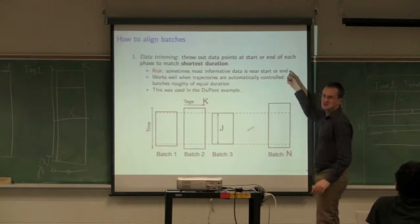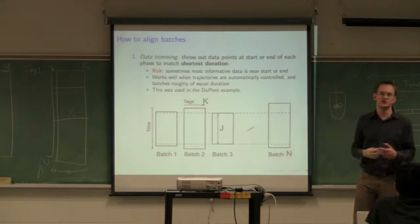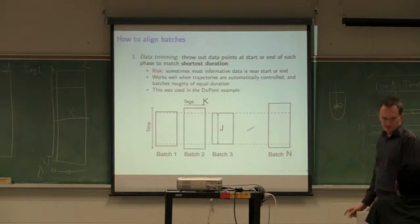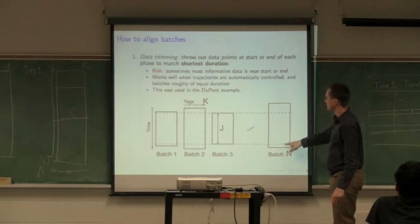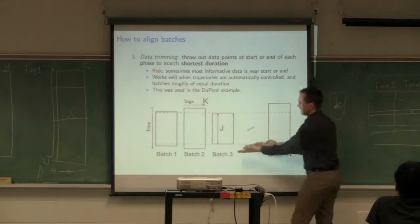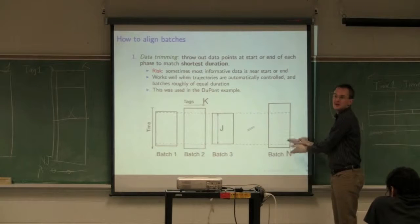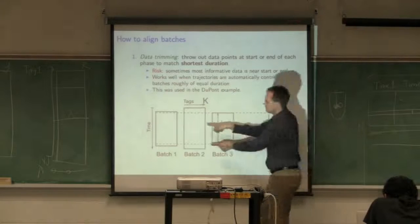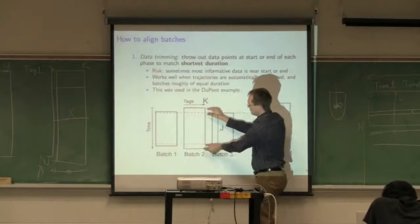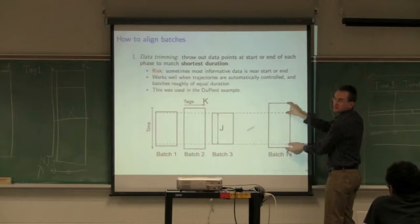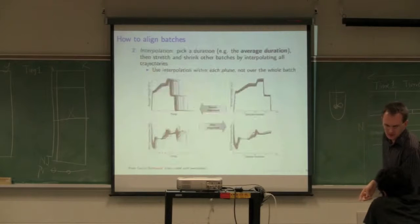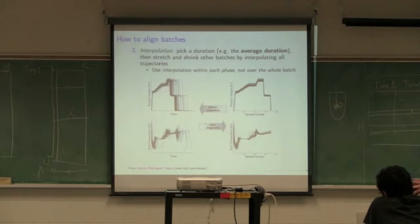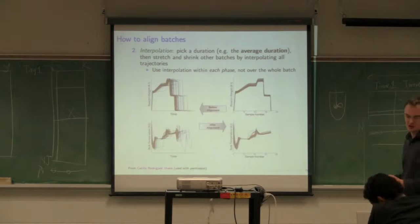One very quick and easy way of dealing with alignment is to just throw out data points at the end of the batch so you get equal data. Here's a case where you pick your shortest batch and just trim off these tops and ends. That's perfectly adequate and very accessible. Works really well when you've got processes that are very well controlled, only off by two or three samples at the tail ends or beginning. That's exactly what DuPont used.